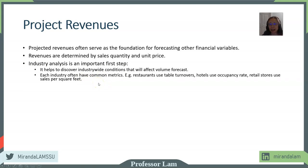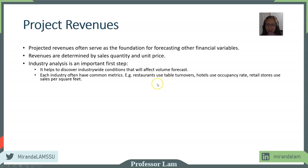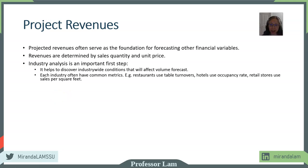Another useful thing to look at is industry-specific metrics. For example, restaurants use table turnover — number of tables times turnover rate gives you guest count, and the average check per table is the unit price. Hotels use occupancy rate. Retail stores use sales per square foot or sales per store. When forecasting, there are no fixed rules; you have to really understand each industry. Therefore, it is very common for analysts to specialize in an industry.